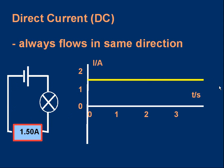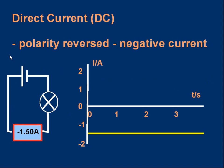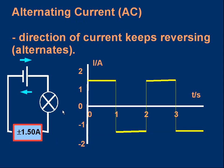If we reverse the polarity — I've swapped plus and minus on the cell, I've just turned it round — the ammeter reading will change to minus 1.5 amps. If I wanted to show that on the graph, I would plot a current of minus 1.5 amps. Alternating current is simply current where the direction keeps reversing — it alternates.